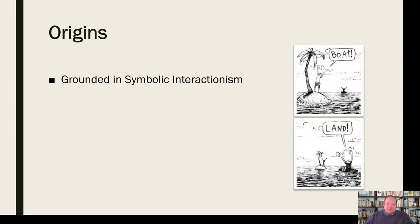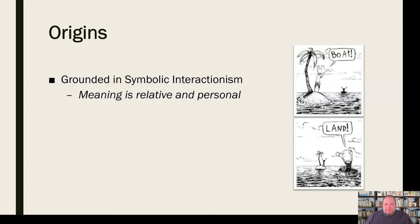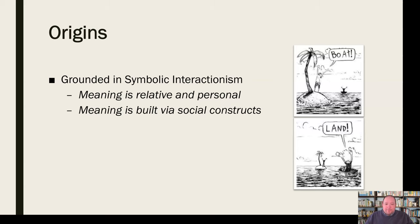With symbolic interactionism, people have different interpretations of things. Somebody on an island sees a boat and gets very excited; somebody on a boat sees an island and gets very excited — they have different meanings for the same construct, the same context. This leads us to the belief that meaning is relative and personal. Meaning really rests within people; the symbols themselves don't have meaning so much as the people observing and engaging with them apply meaning. It's very subjective and varies from person to person.